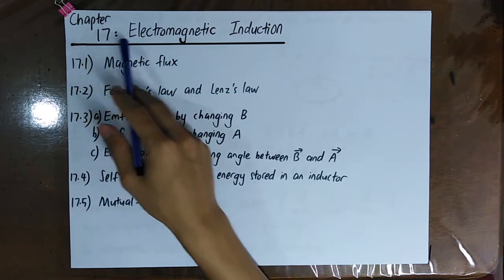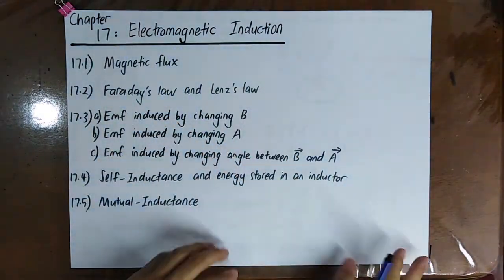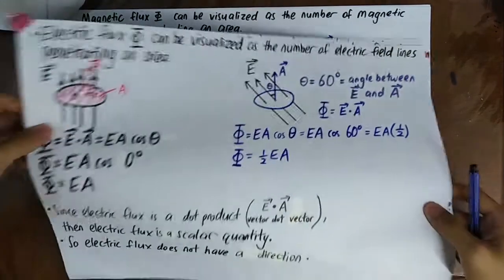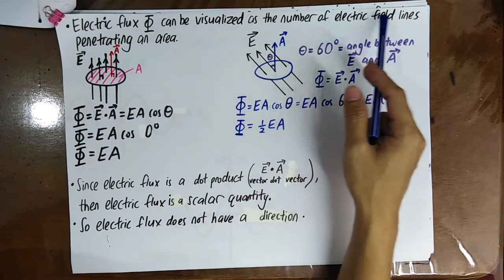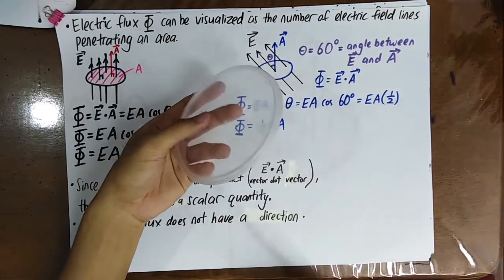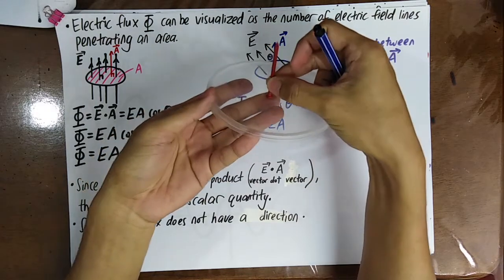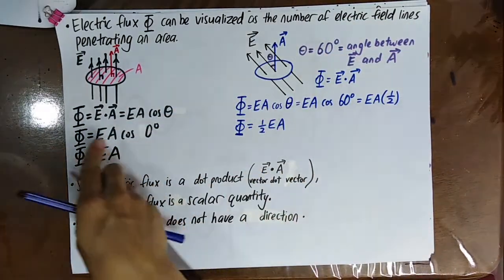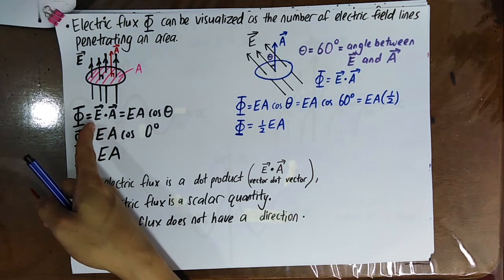Welcome to chapter 17, which is electromagnetic induction. In this video we will talk about magnetic flux. Recall what you learned in video 12.3: electric flux can be visualized as the number of electric field lines penetrating through an area. The area vector is always perpendicular to the surface area at every point. The electric flux phi is equal to E dot A, where E is the electric field strength.